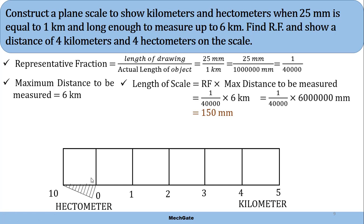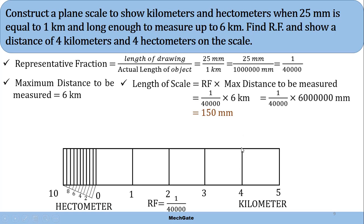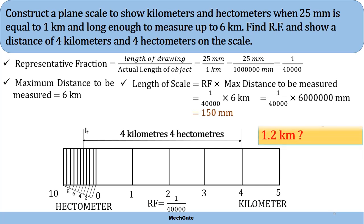After dividing, extend the lines to get 10 divisions representing hectometers, numbered 2, 4, 6, 8, and 10. Write the representative fraction below the scale. Now on this scale, represent 4 kilometers and 4 hectometers: 4 kilometers is marked here on the right, extend a line; 4 hectometers is marked on the left, extend another line — and that represents 4 kilometers and 4 hectometers.